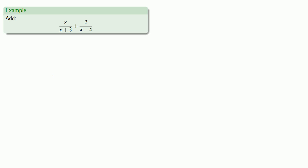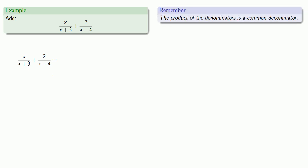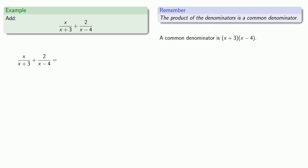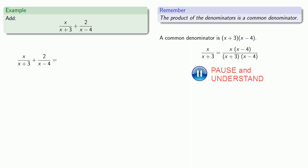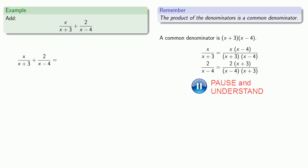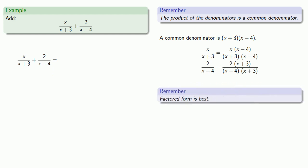How about something like x over x plus 3 plus 2 over x minus 4? Since our denominators are different, we need to find a common denominator. A useful thing to remember is that the product of the denominators is a common denominator. So a common denominator will be x plus 3 times x minus 4. If I want x over x plus 3 to have this denominator, I'll need to multiply numerator and denominator by x minus 4. And if I want 2 over x minus 4 to have this denominator, it's missing that factor of x plus 3, so we'll multiply numerator and denominator by x plus 3. Remember, factored form is best, so we'll leave our denominator in the form x plus 3 times x minus 4.